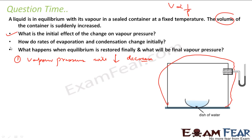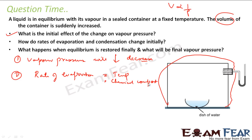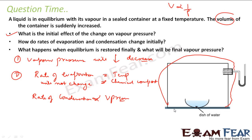The second question: how does the rate of evaporation and condensation change initially? The rate of evaporation is dependent on temperature only and the chemical compound. So if the temperature is not changed, the rate of evaporation will not change. Now the rate of condensation — it is dependent on vapor pressure. So if vapor pressure has decreased, the rate of condensation will also decrease.